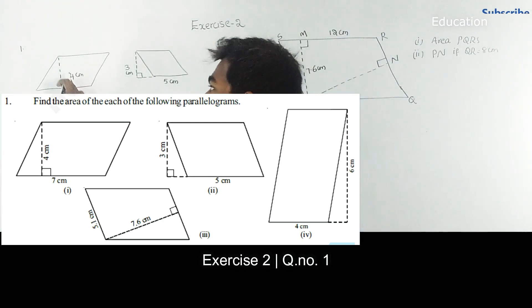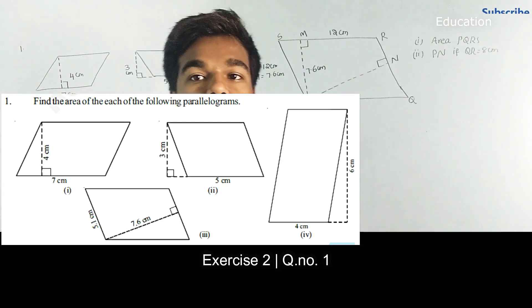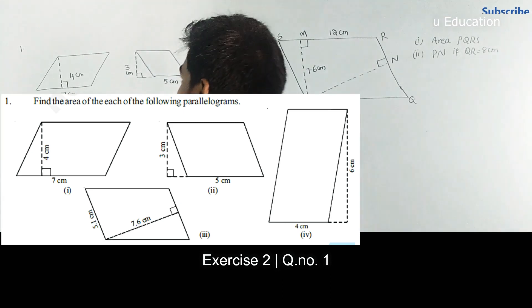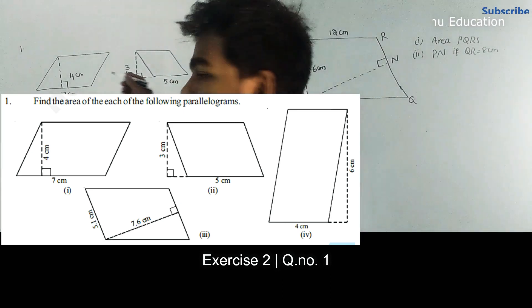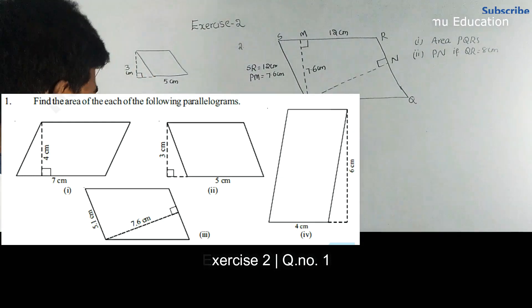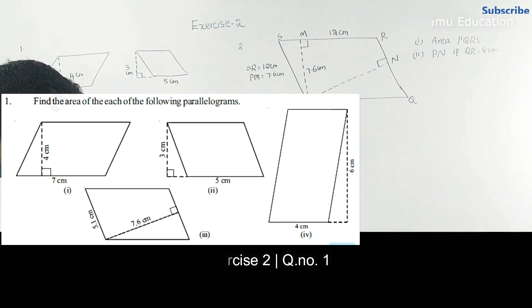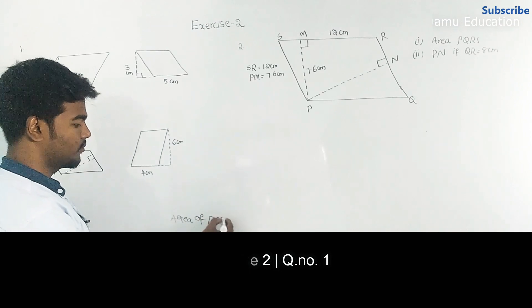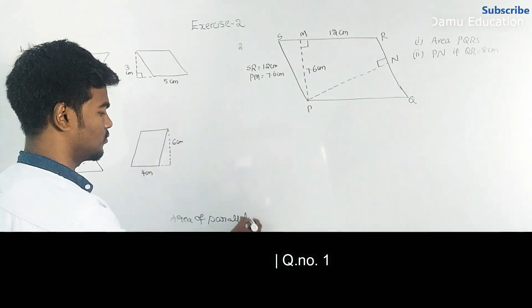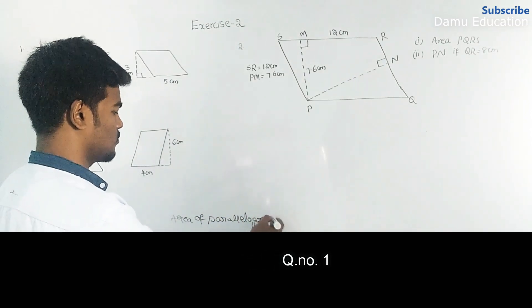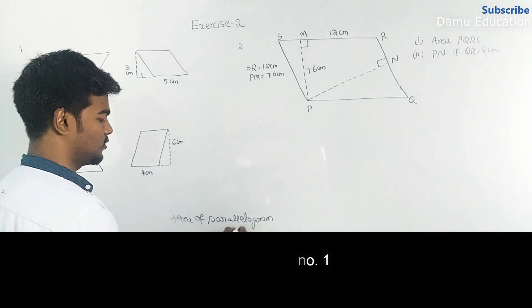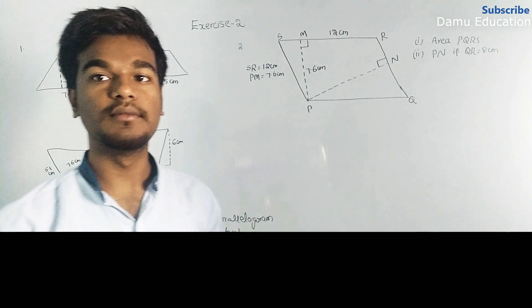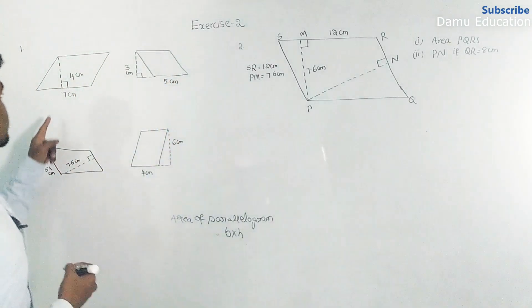Here base is seven and height is four. The formula for area of a parallelogram is: area of parallelogram equals base into height.